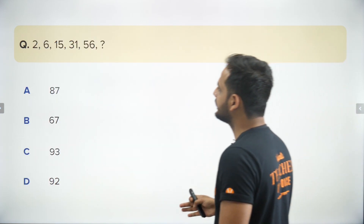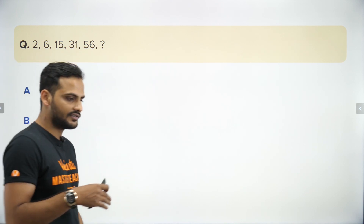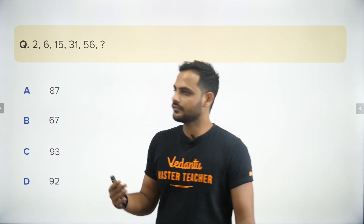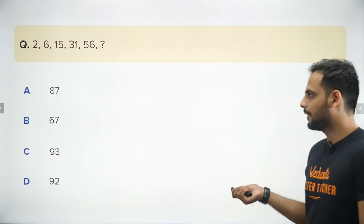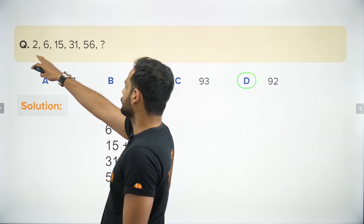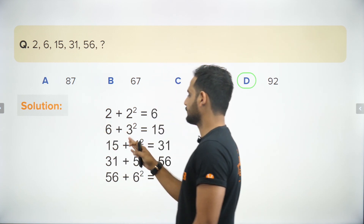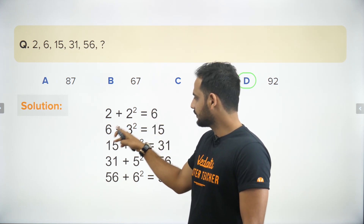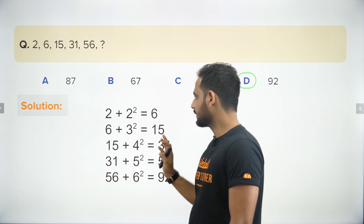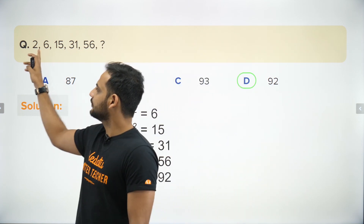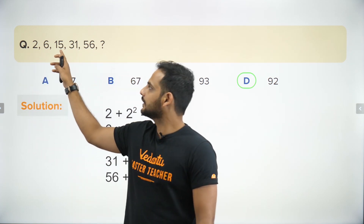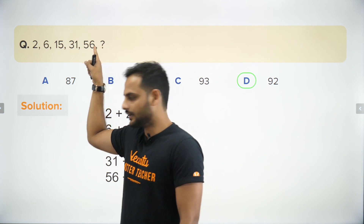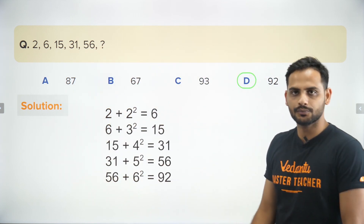The next sequence is 2, 6, 15, 31, 56. The pattern here is: start with 2, then add 2² to get 6, add 3² to get 15, add 4² to get 31, add 5² to get 56. You can also see this through differences: 4, 9, 16, 25 — perfect squares. So the next number should be 56 + 36 = 92. Easy pattern, easily identified.